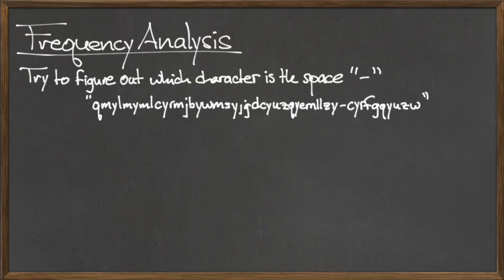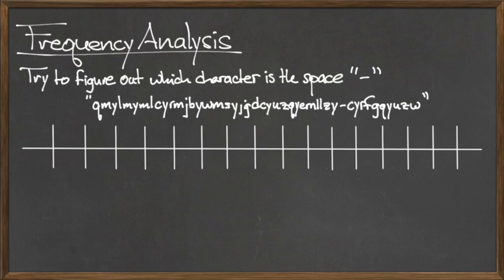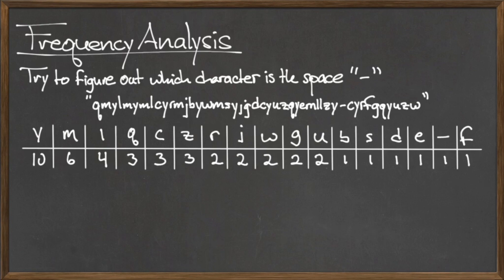In the English language, the most commonly used character is the space. Once Eve discerns which character has been encoded as the character space, she then knows exactly how many character shifts were used in the Caesar cipher, and therefore can break the message.